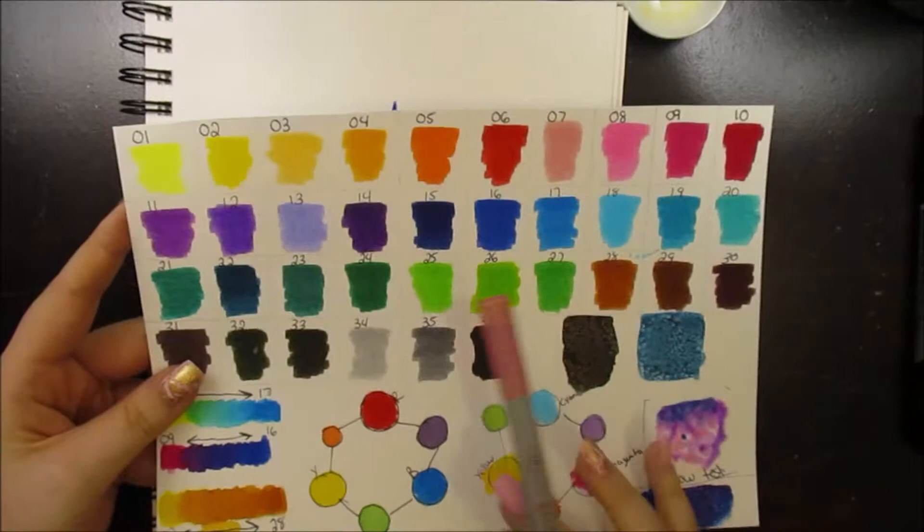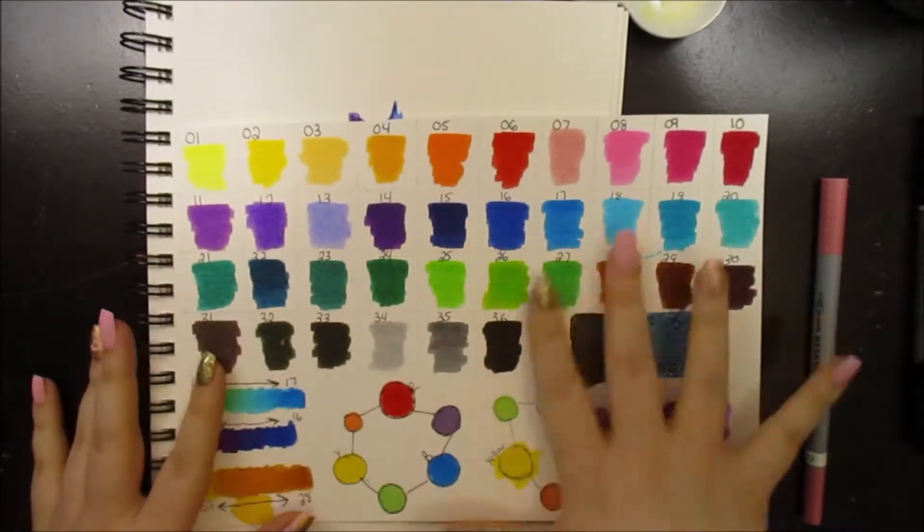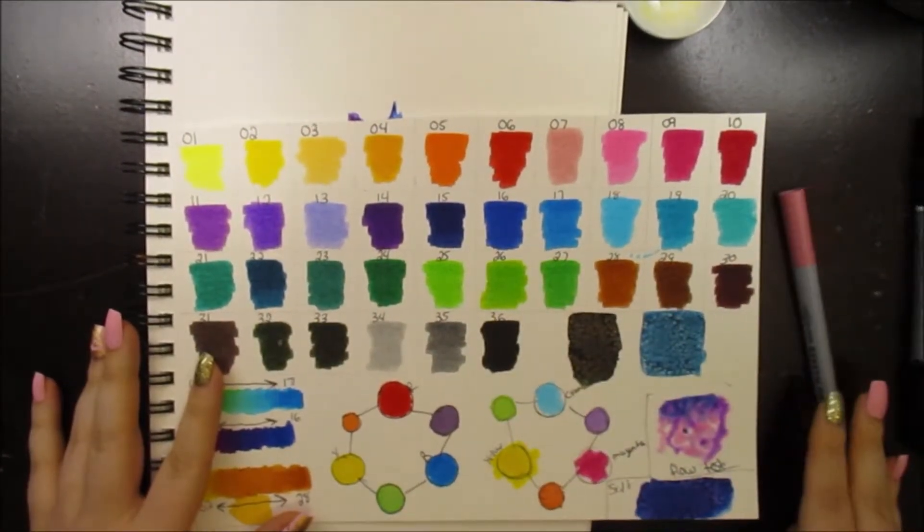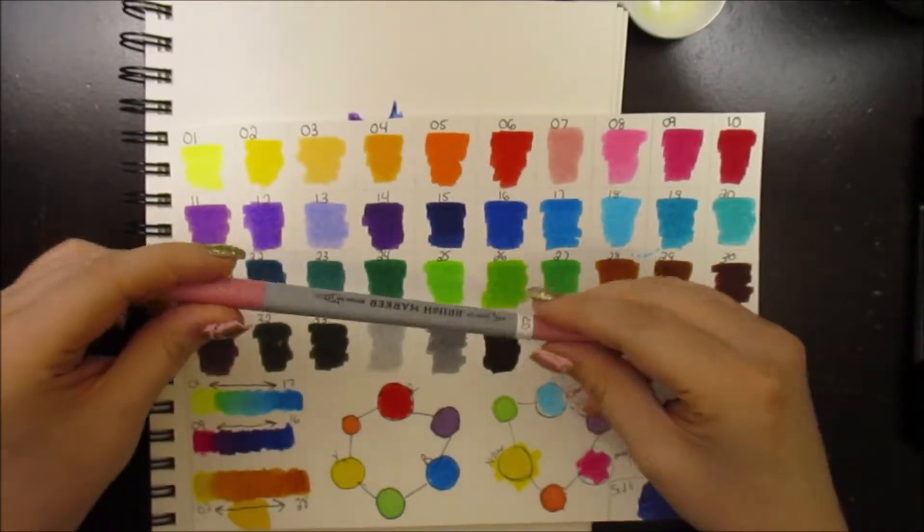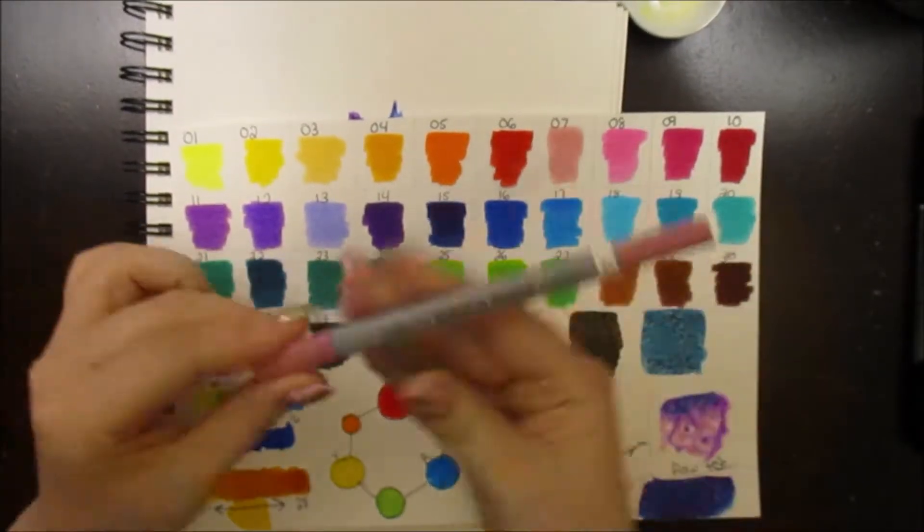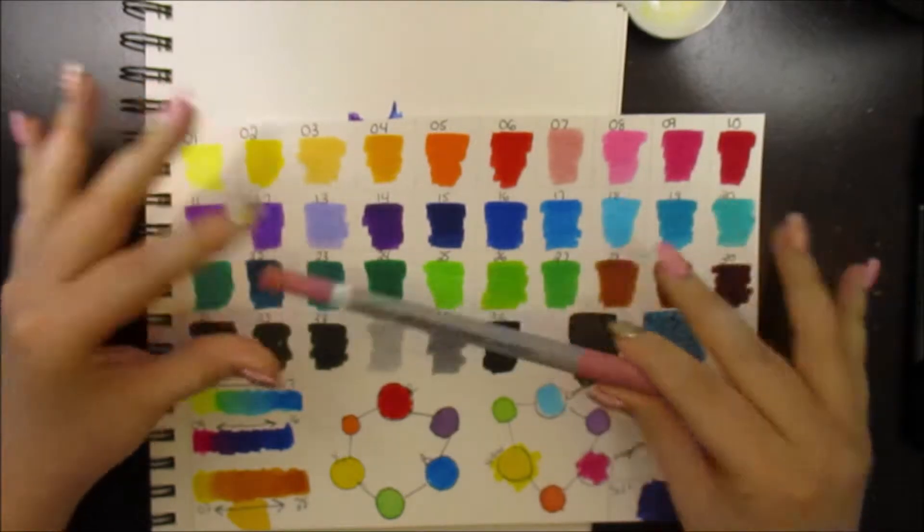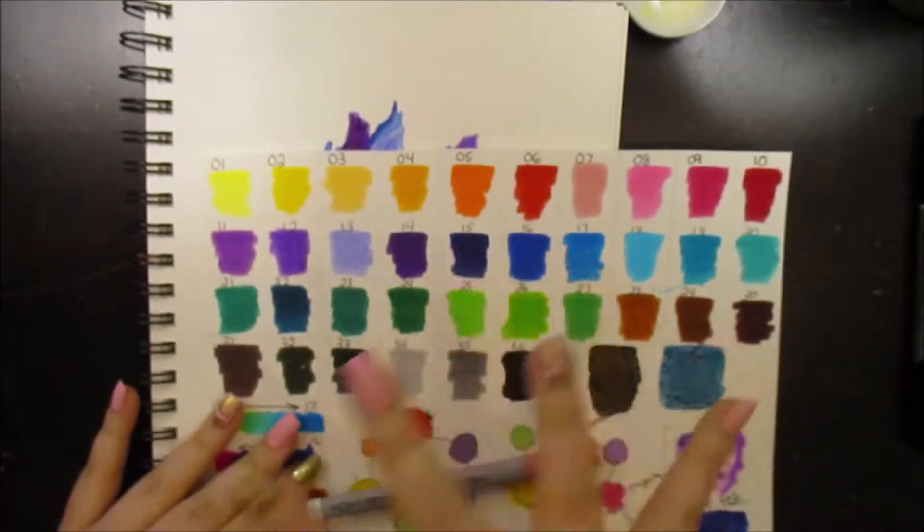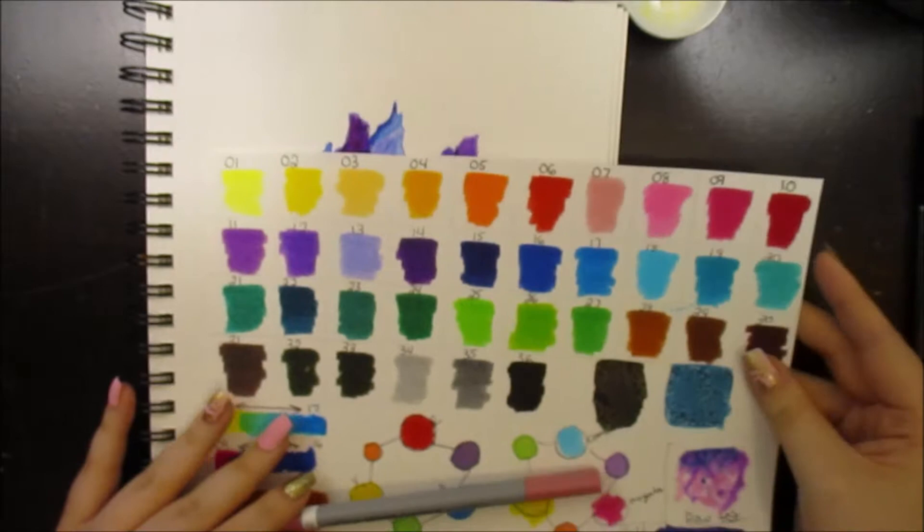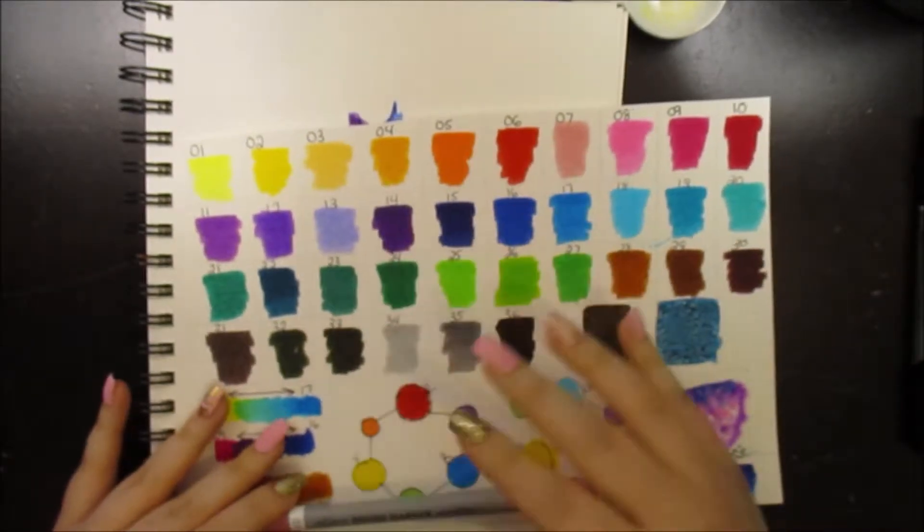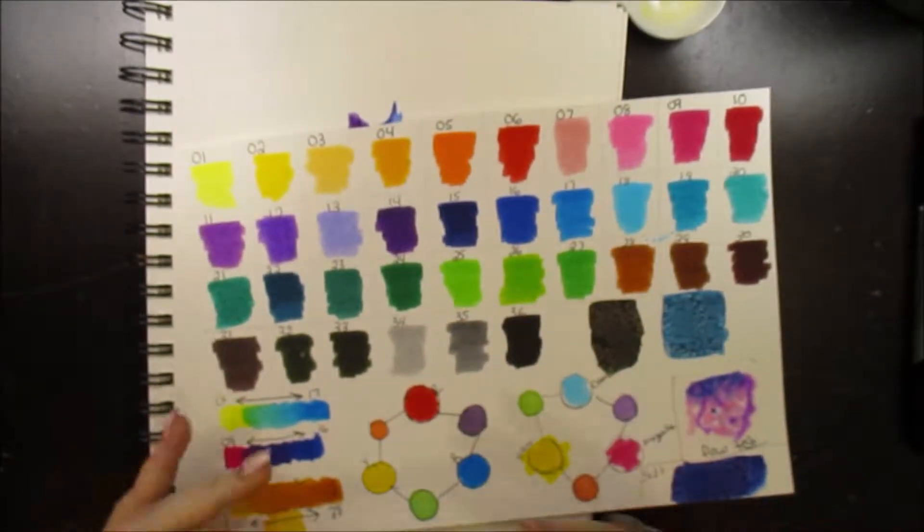As you can see by this color chart that I made, which is the first thing that I did when I got them home, I swatched them all out. And these markers are so cheap that they don't even have color names on them or numbers or anything else. This color chart, I named all of these just for reference so that I would be able to quickly access the colors that I wanted.